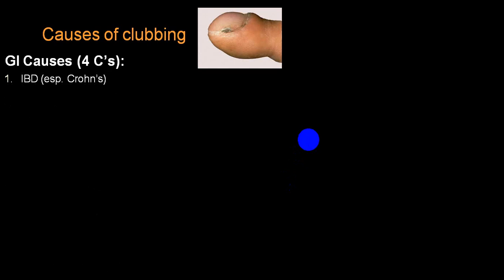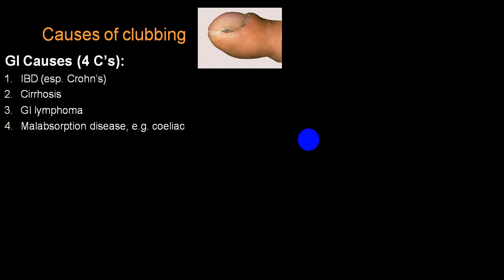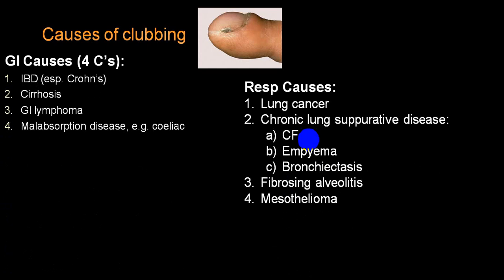Flapping tremors can be seen in a large number of conditions, but the three classical ones to always remember are: hepatic encephalopathy, uremia, and severe COPD — which we can call carbon dioxide narcosis. Clubbing is very classical in Crohn's disease or IBD, cirrhosis of liver, lymphomas, malabsorption syndromes like celiac disease.